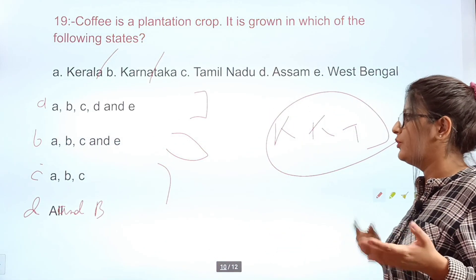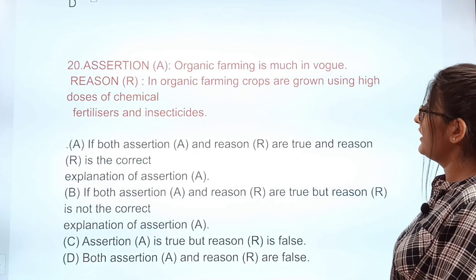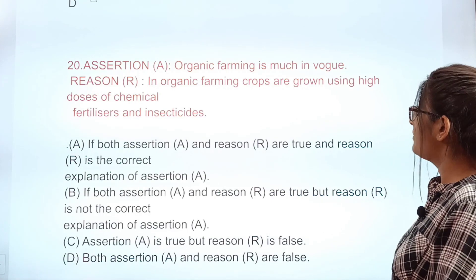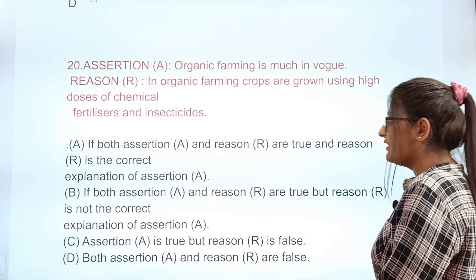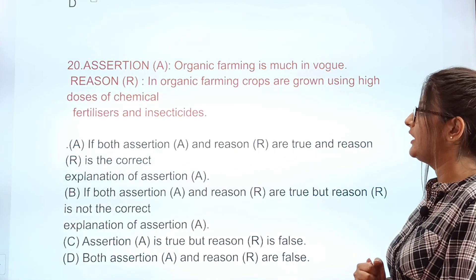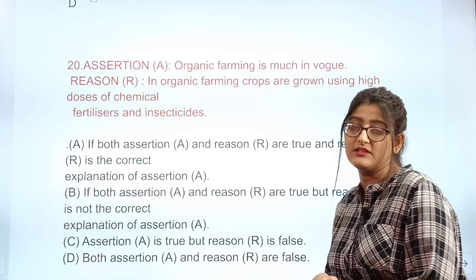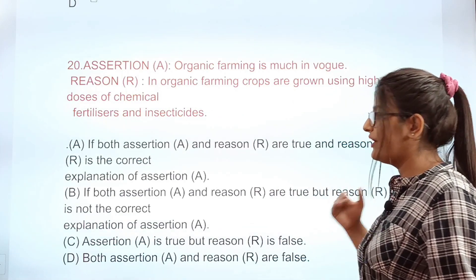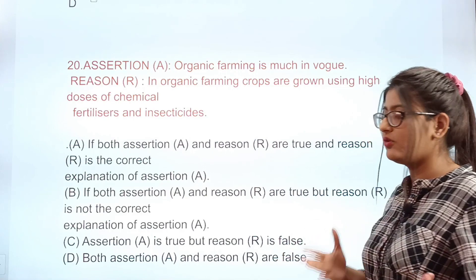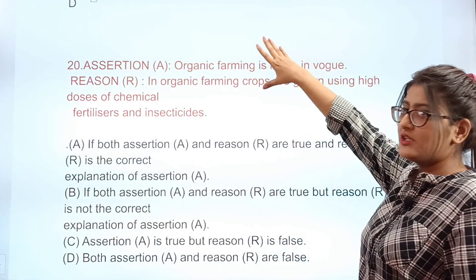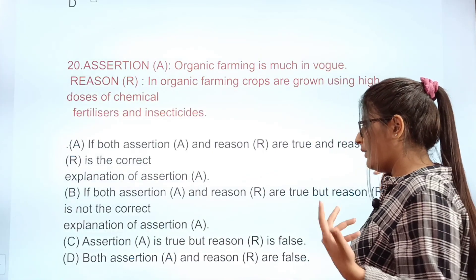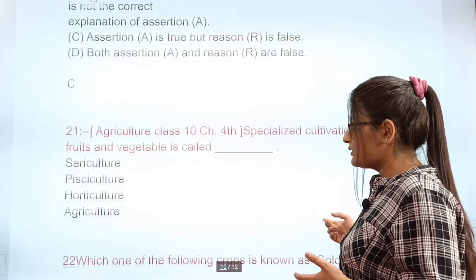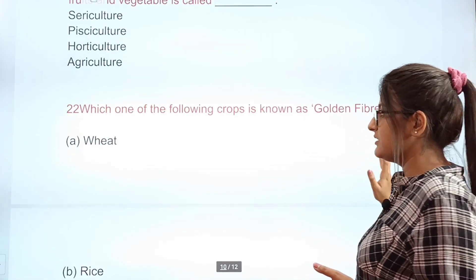Question 20 is an assertion and reason question. Assertion: Organic farming is much in vogue. Reason: In organic farming, crops are grown using high doses of chemical fertilizers and insecticides. The reason is totally false — that describes chemical farming, not organic farming. So this is a hint: choose the option where assertion is true but reason is false.